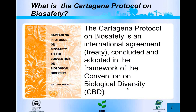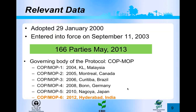The Cartagena Protocol on Biosafety is an international treaty concluded and adopted in the framework of the Convention on Biological Diversity. This protocol was adopted on January 29, 2000, but entered into force on September 11, 2003. Until May 2013, there are 166 parties that are part of this protocol — the number had been 164 in January, with Afghanistan being the last party to join.